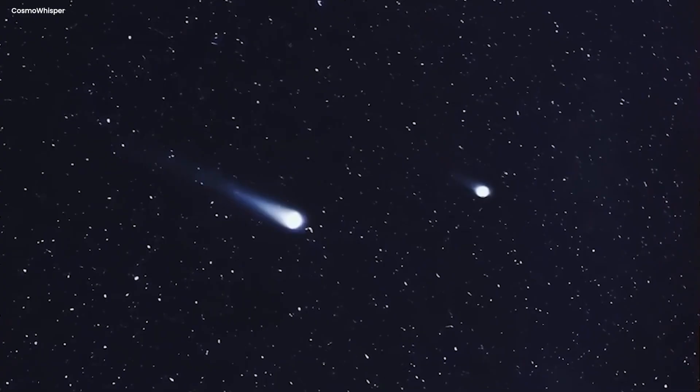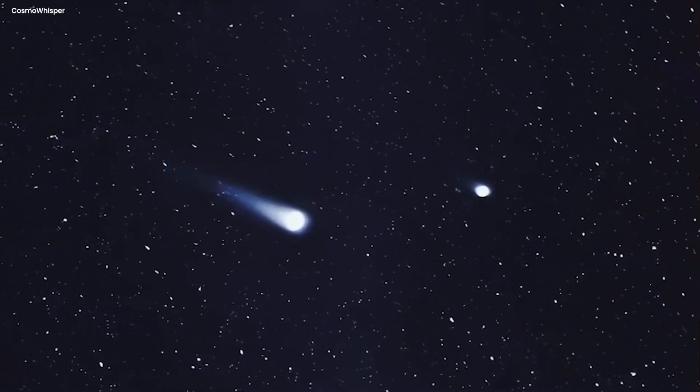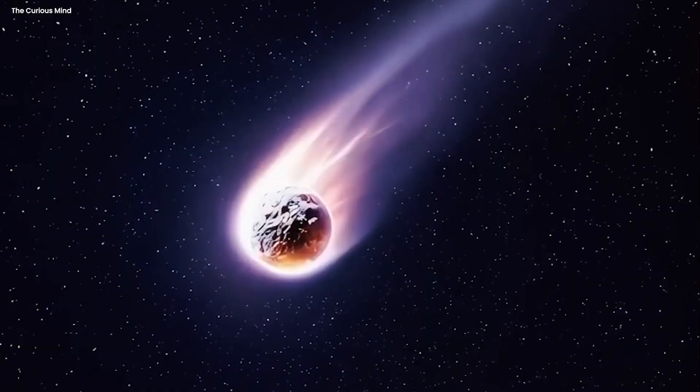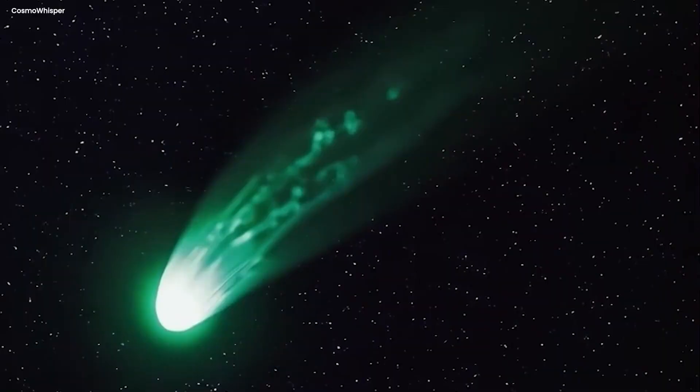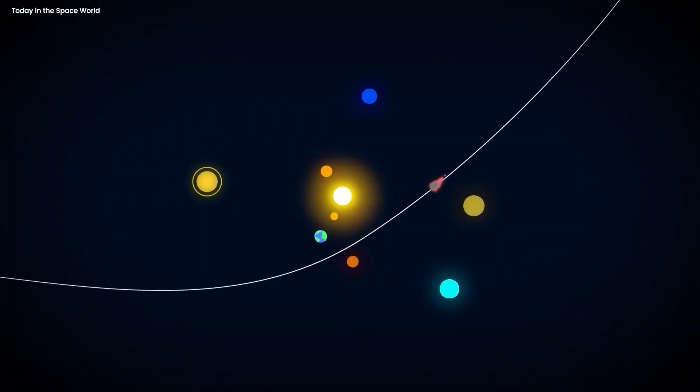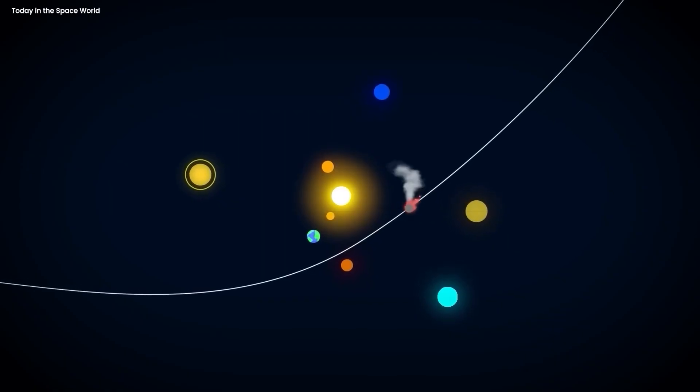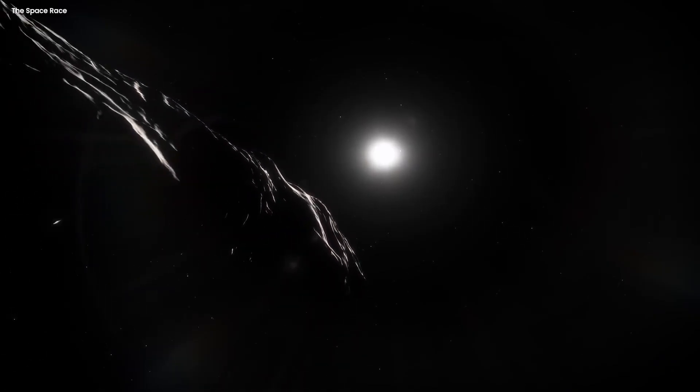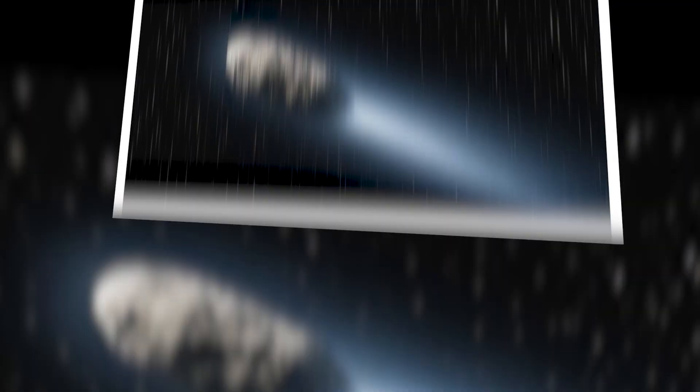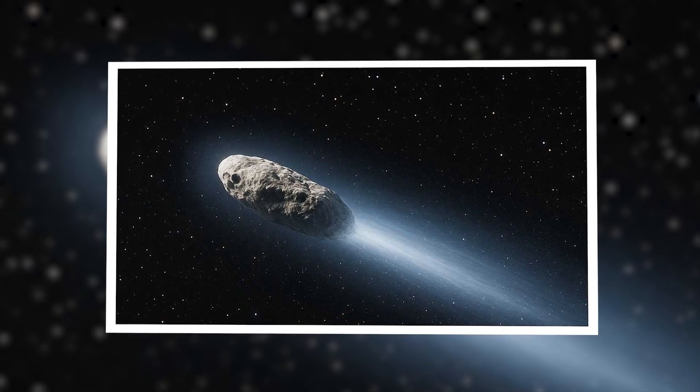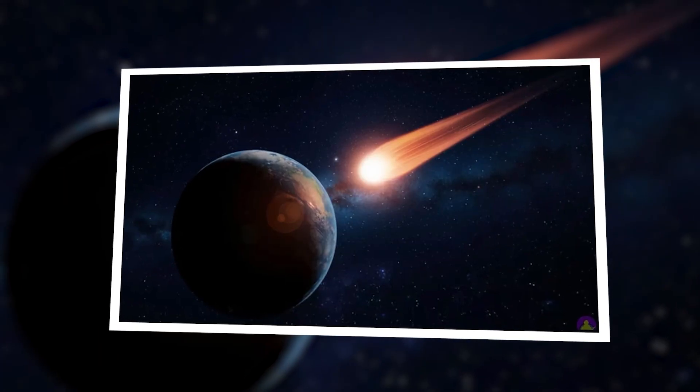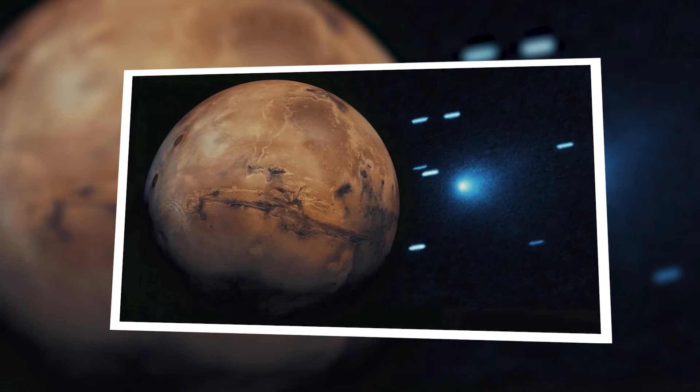Now, does this mean that 3i Atlas is definitely an alien probe? No, it could still be a completely natural object. A comet from another star system that just happens to have a weird composition and a trajectory that coincidentally lines up with the most interesting targets in our solar system. That's possible. Unlikely, but possible. But what we can say for certain is that the idea of 3i Atlas being an alien probe makes a lot more sense when you stop assuming Earth was the target and start looking at where this object is actually going.